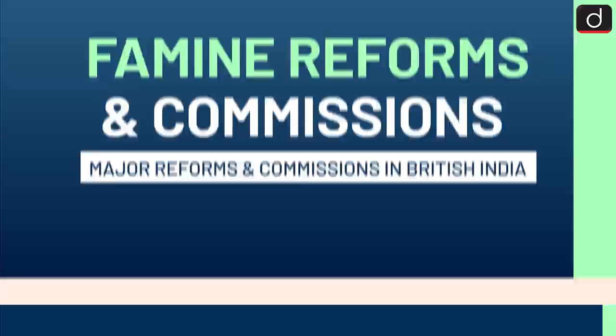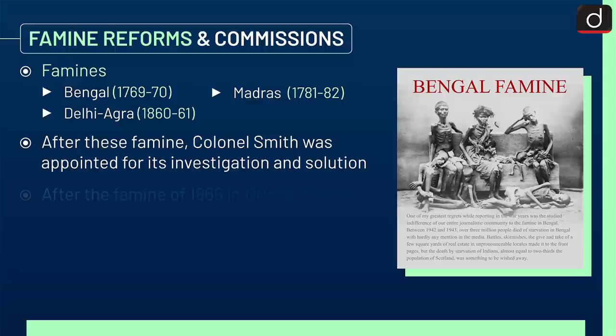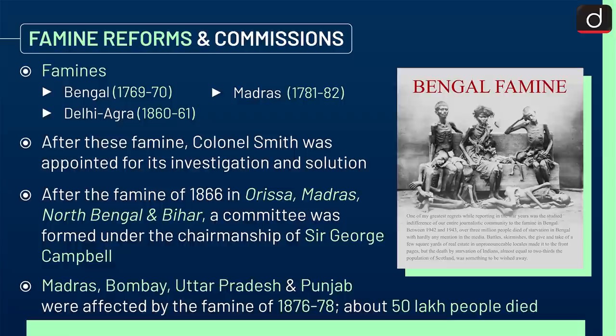The third and last dimension is Famine Reforms and Commissions. Major famines included Bengal 1769-70, Madras 1781-82, and Delhi-Agra 1860-61. After the 1860-61 famine, Colonel Smith was appointed for investigation and solution. After the famine of 1866 in Odisha, Madras, North Bengal and Bihar, a committee was formed under Sir George Campbell. The famine of 1876-78 affected Madras, Bombay, Uttar Pradesh and Punjab, in which about 50 lakh people died.